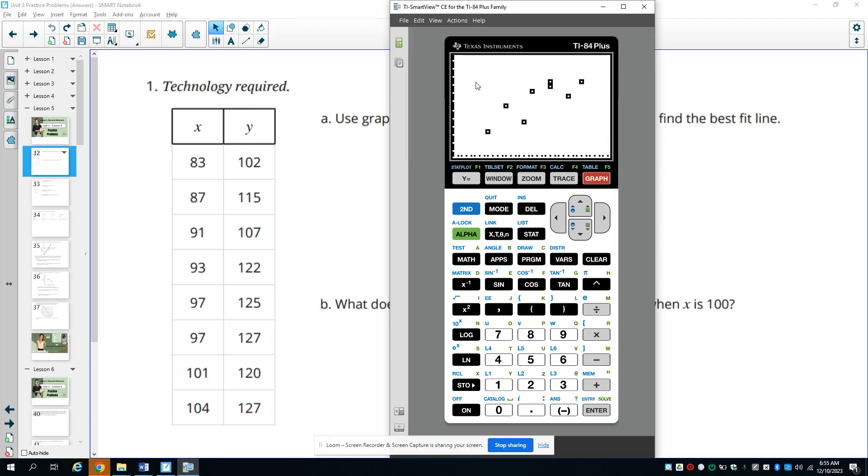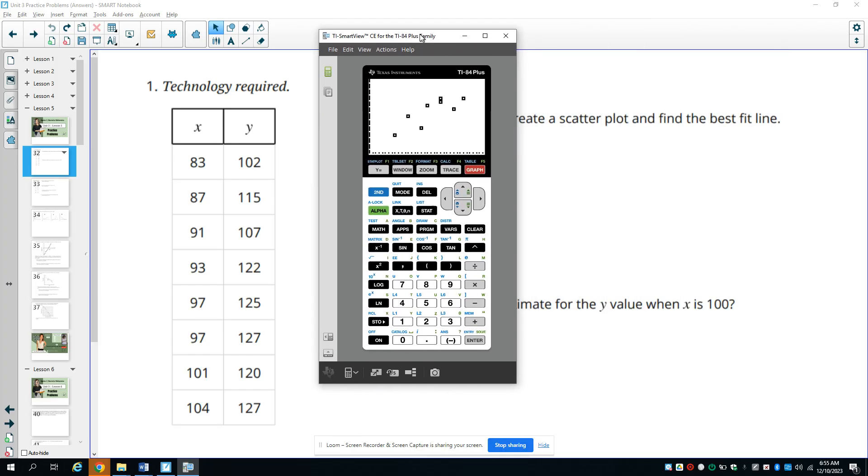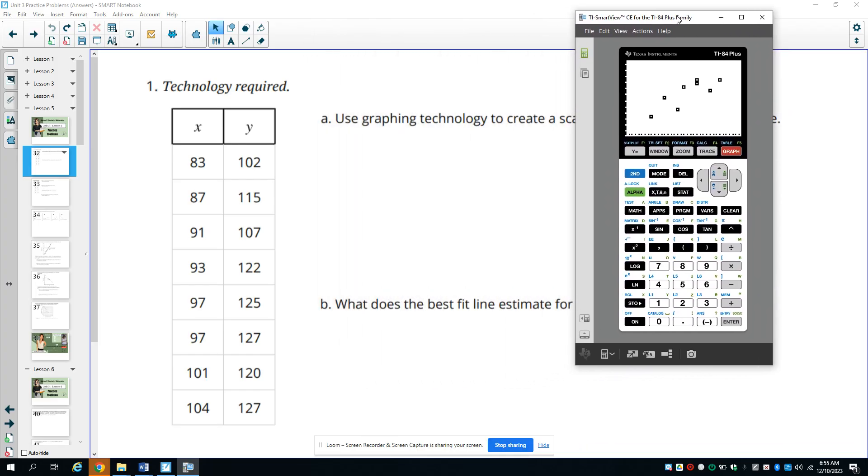So here's your scatter plot. And then you could draw a sketch here if you wanted to. And then it wants you to find the line of best fit.